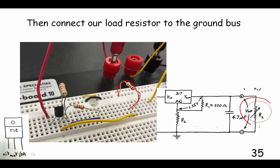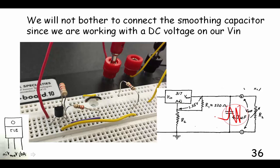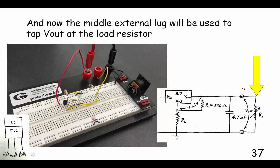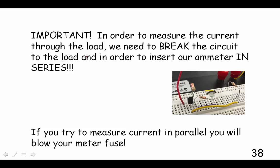Note that we are not using the filtering capacitors here because our input voltage is already DC, and it doesn't have any variation on that, so we don't need to smooth the output of our regulator. And now the middle lug will be used to tap Vout. So there's my Vout tap right above the load, and I'm going to go right into that lug.